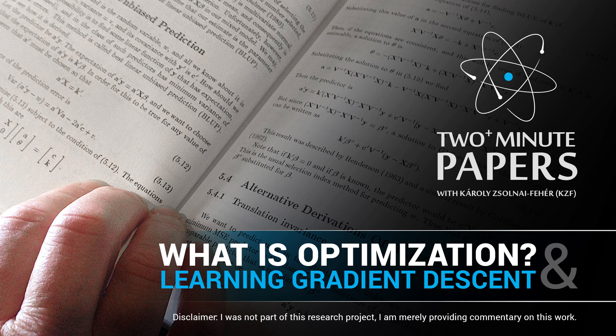We are going to talk about mathematical optimization. This term is not to be confused with the word optimization that we use in our everyday lives for improving the efficiency of a computer code or a workflow. This kind of optimization means finding one hopefully optimal solution from a set of possible candidate solutions.